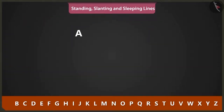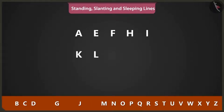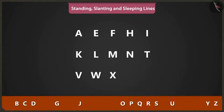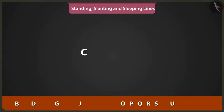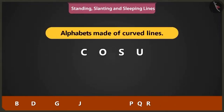It looks like the alphabets A, E, F, H, I, K, L, M, N, T, V, W, X, Y, and Z are made using standing, slanting, and sleeping lines. C, O, S, and U alphabets are made using curved lines.